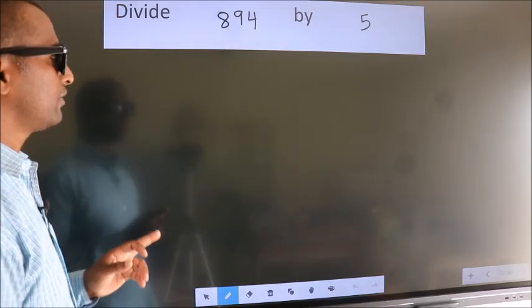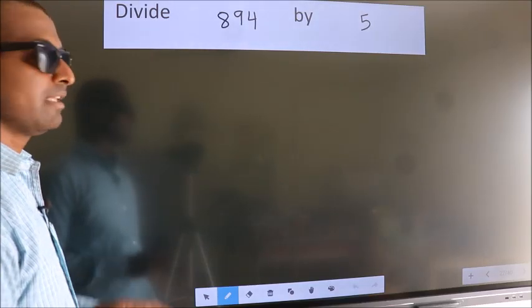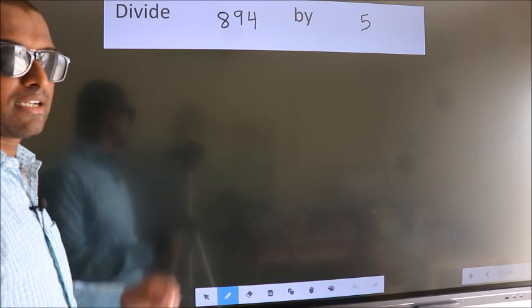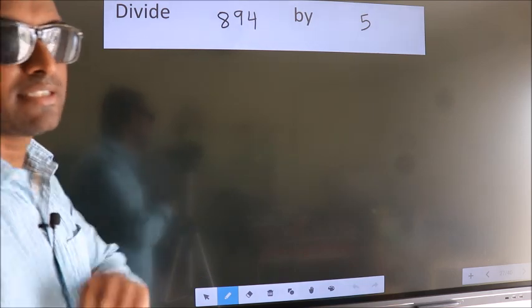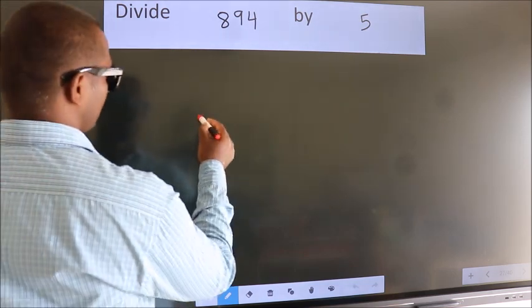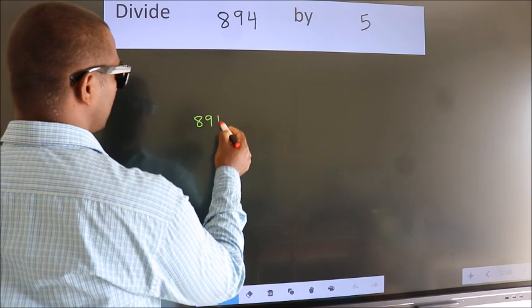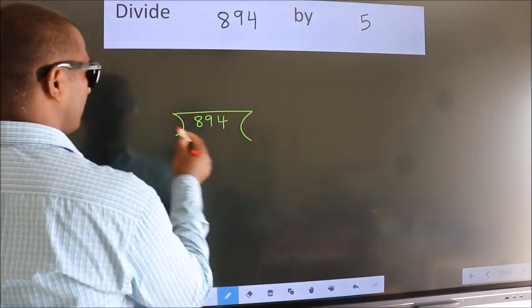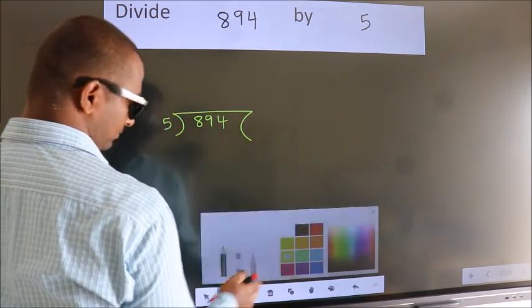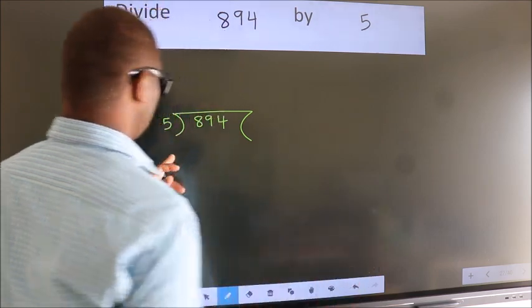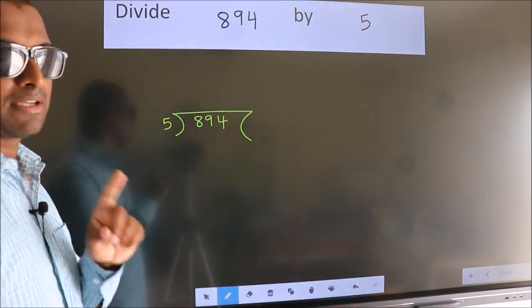Divide 894 by 5. To do this division we should frame it in this way: 894 here, 5 here. This is your step 1.